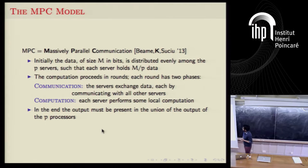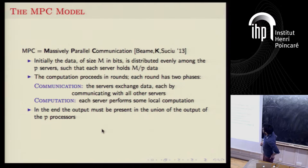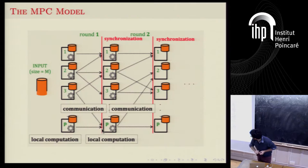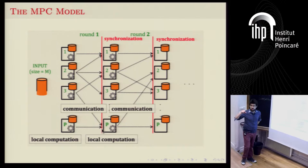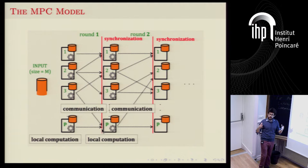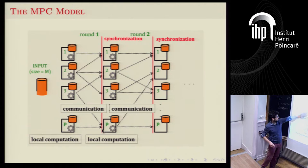Let's start with the model we're going to use. We call it the MPC model — Massively Parallel Computation Model. You have P processors. Initially, you have this data; I'm going to denote the size of the data by big M in bits, and small m for the size in tuples. The input of size M is initially evenly distributed between the P machines, so each has M over P data. We make no assumption about how this data is distributed.